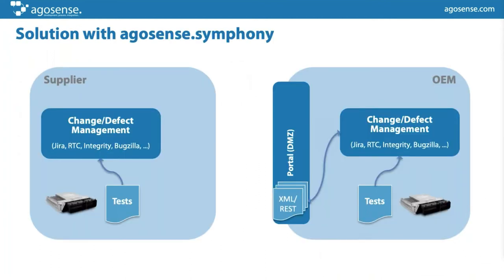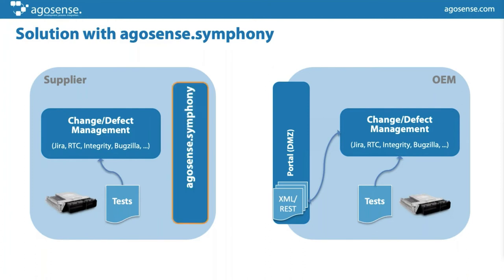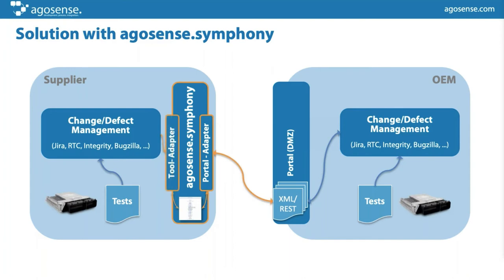Let's look at how the solution works with Symphony. The supplier uses Symphony and we install the respective portal adapter for the OEM system, retrieving data and putting it back into your internal change management system. The data flow goes in both directions. It's that simple as shown on the slide, but it can get more complex.